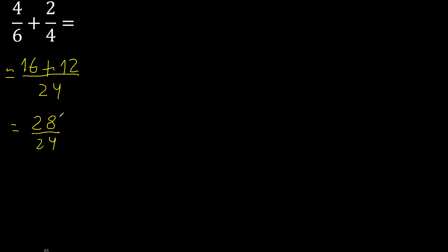28 can be simplified because it can be divided by the same number. Divided by 2: 28 divided by 2 is 14, 24 divided by 2 is 12. This can be divided by 2 again.